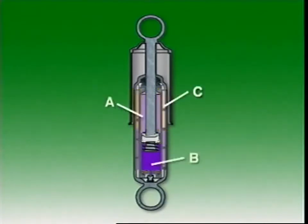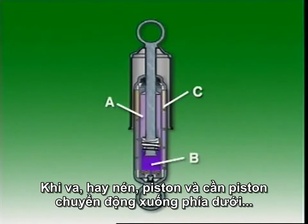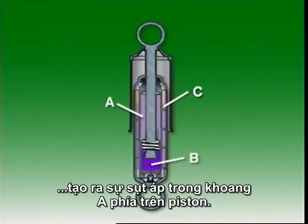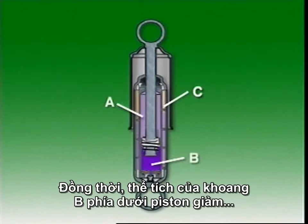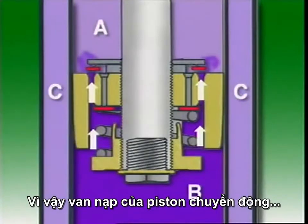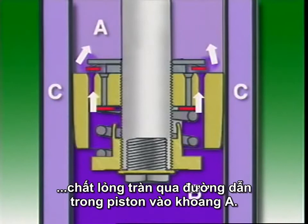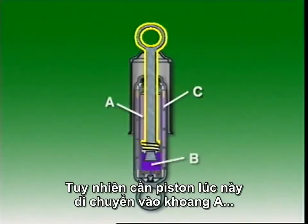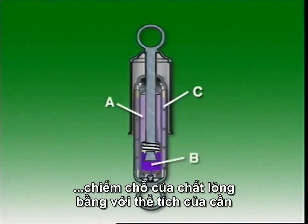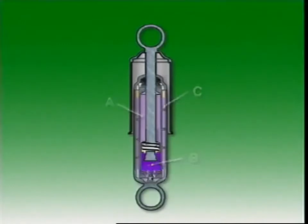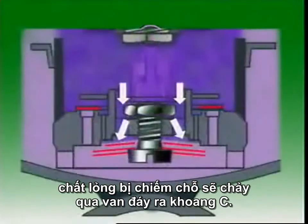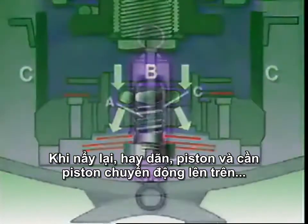On bump or compression, the piston and rod move downwards in the cylinder, resulting in a small pressure drop in chamber A above the piston. At the same time, the volume of chamber B below the piston is reduced, causing a high fluid pressure. This unseats the piston intake valve and fluid flows up through the outer passages in the piston and into chamber A. But the piston rod is also entering A and displacing a quantity of fluid equal to its volume, so all of the oil in B cannot flow into A. The displaced fluid is forced down through a base valve and out into the reservoir labeled C.